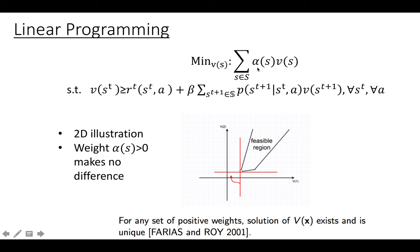Let's illustrate this with a graph. Suppose we have two states, state 1 and state 2, giving values V1 and V2. The feasible region looks like a polygon, and the objective function is a line. Moving the line around to find the minimum, the optimal point is identified. It has been proven that any positive weight will make no difference to the optimal point — because changing alpha changes the angle of the line, but no matter how you rotate it, you always hit the same optimal corner point.